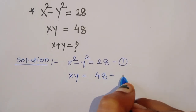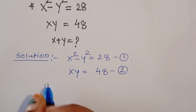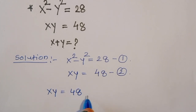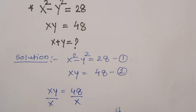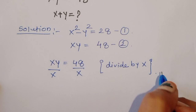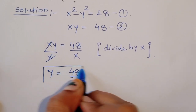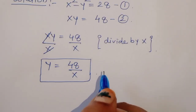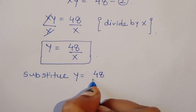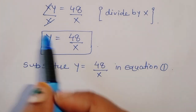Next, xy = 48, this is equation 2. From equation 2, we can divide both sides by x. This will cancel, and we get y = 48/x. This is the value of y.